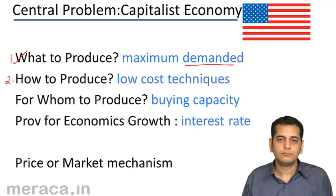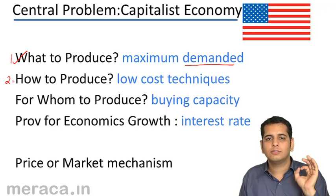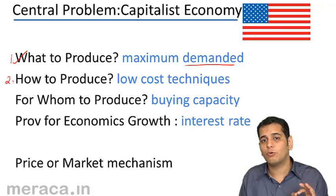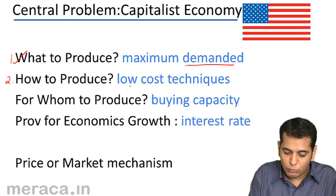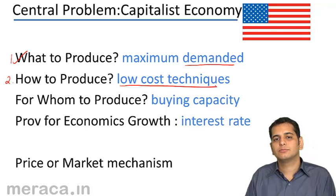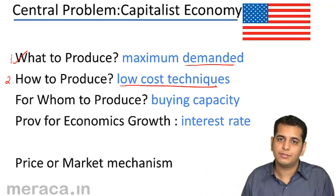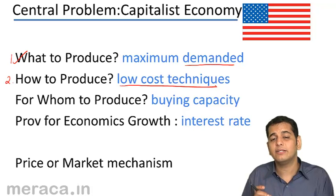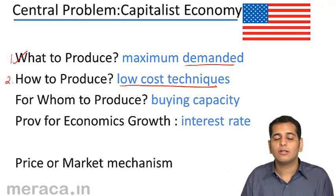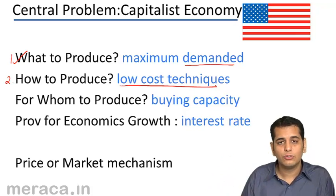The second question is how to produce. A capitalist economy always wants more profits. To earn more profits, they tend to use low cost techniques of production. When the cost of the product is lower, profit automatically gets higher. So they resort to low cost production techniques. Please bear in mind that these techniques may not necessarily be good for the society, but because they are low cost they reduce cost and lead to higher profit — capitalists would always resort to low cost techniques.